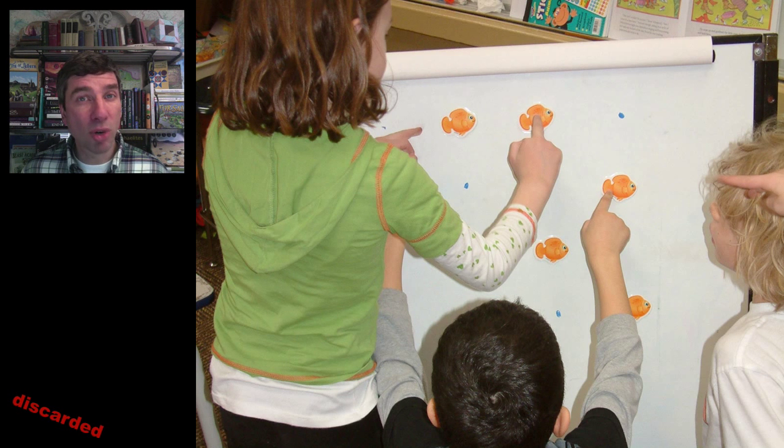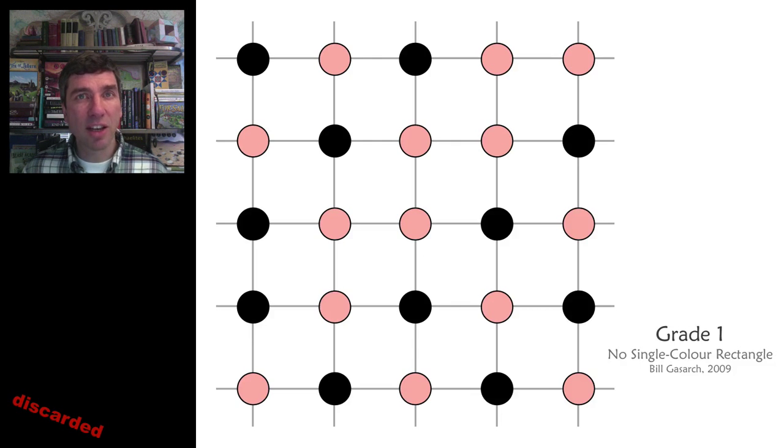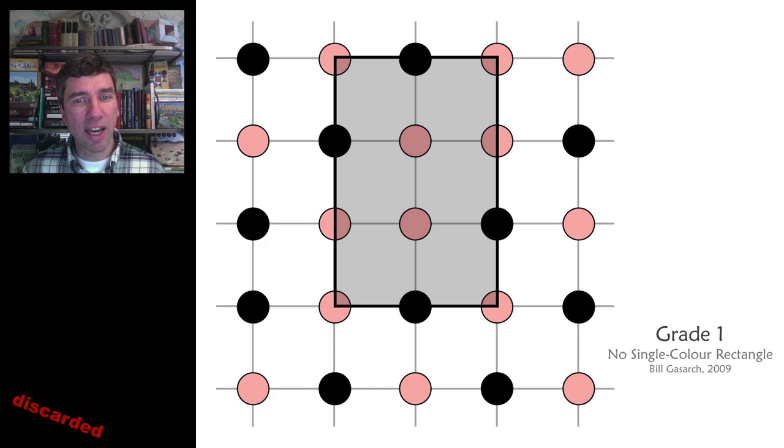The next problem is more difficult but related. It's the no single colour rectangle. So what does that mean? It means that the corners of any rectangle, the 4 corners, have to be all different colours. So here we failed because you can see that there's 4 pinks at the edges of this rectangle.